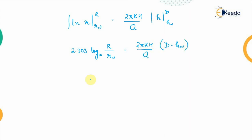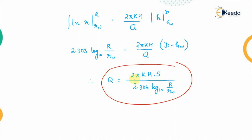Therefore Q = 2πKH(D − H_w) / [2.303 × log₁₀(R/R_w)]. Here (D − H_w) is denoted by S, the drawdown. So Q = 2πKHS / [2.303 × log₁₀(R/R_w)], where S = D − H_w is the drawdown — the difference between the piezometric surface and the height of water in the well, i.e., the level by which the water has fallen. This completes the discussion of Darcy's law and Dupuit theory.